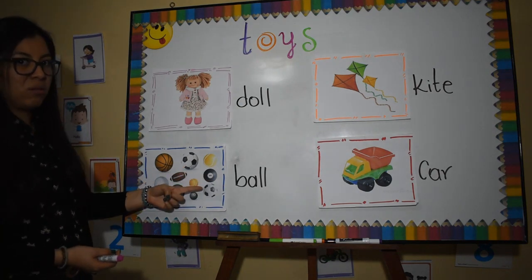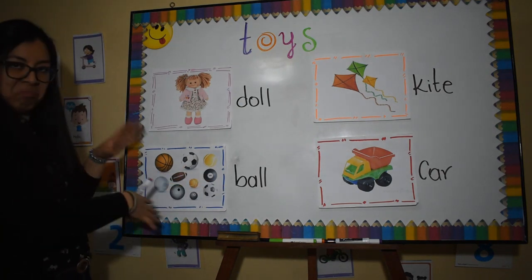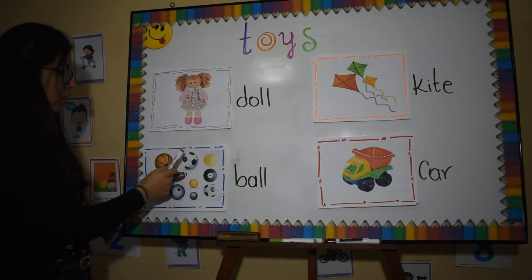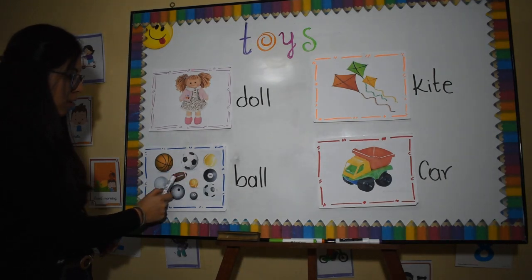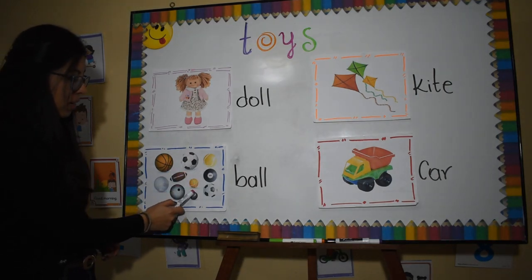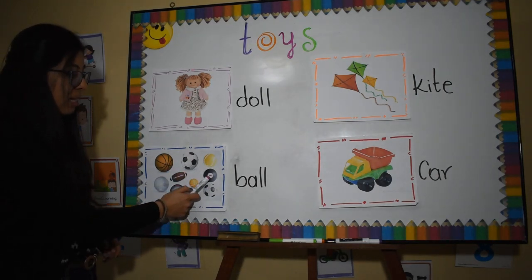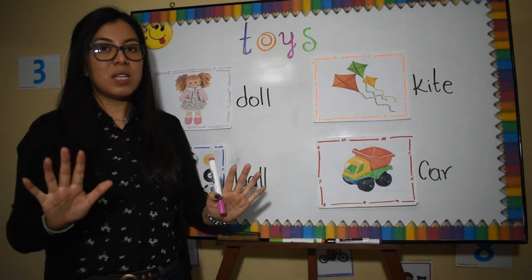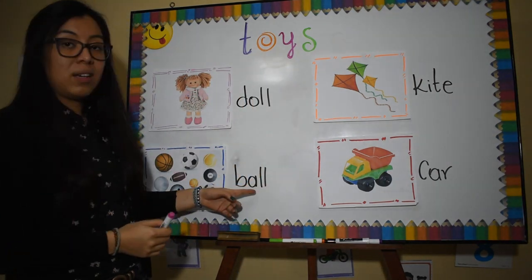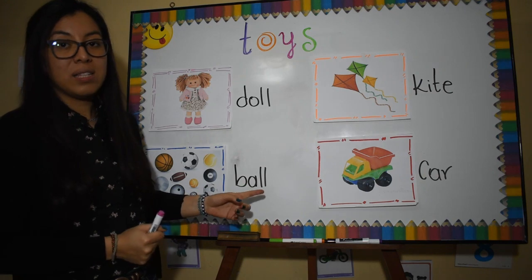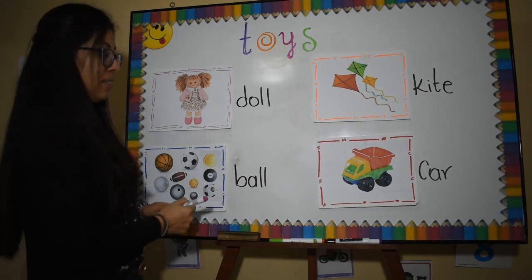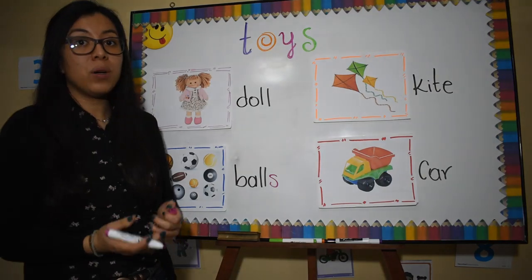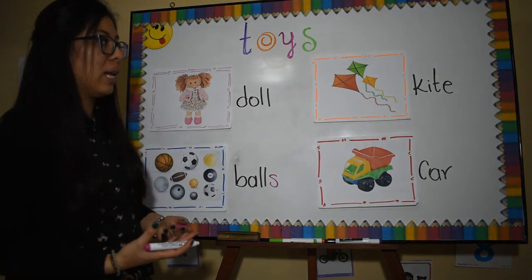Ball. Aquí dice ball, pero hay varias pelotas, ¿cierto? Vamos a contar: one, two, three, four, five, six, seven, eight, nine, ten. Bien, como tenemos diez pelotas, ¿ustedes qué creen? ¿Que aquí va con S al final? Sí, muy bien — balls. Porque son varias, estamos hablando en plural.